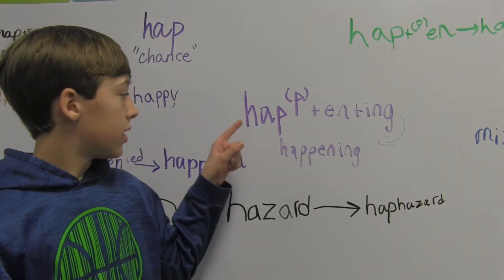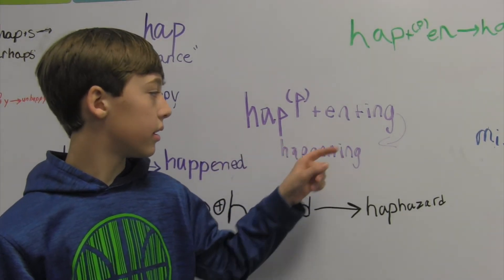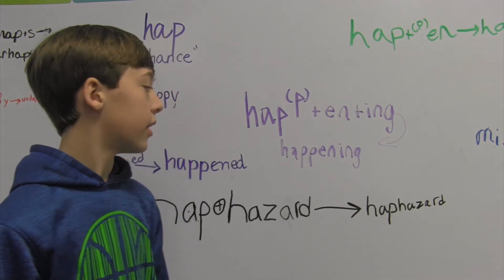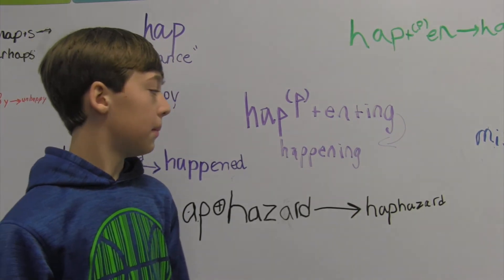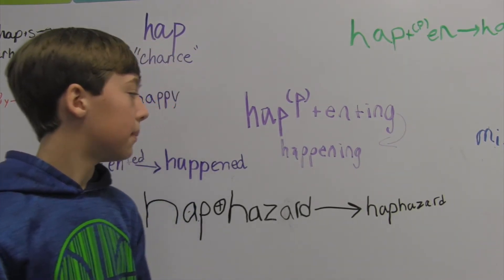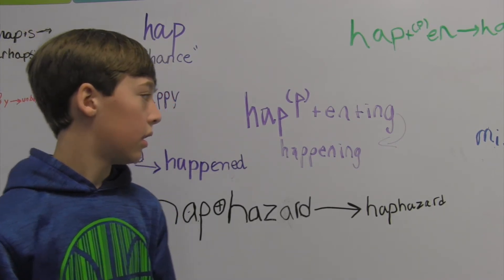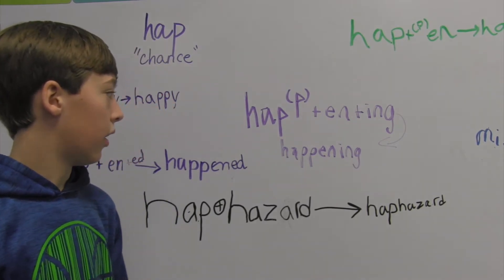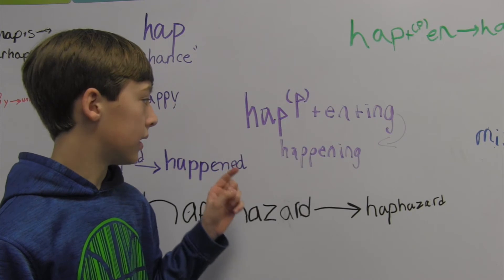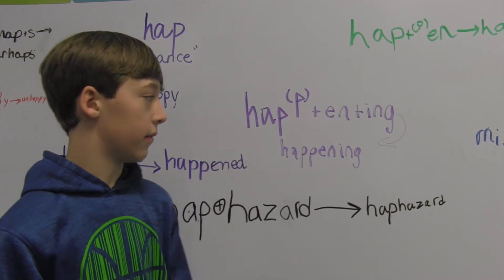H-A-P plus E-N plus I-N-G is rewritten as H-A double the P-E-N-I-N-G. We double the P because we are adding a suffix that starts with a vowel and it's a one syllable base with a final consonant and a vowel in front of it.